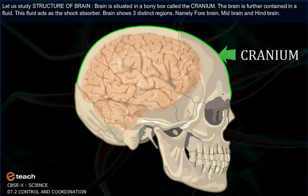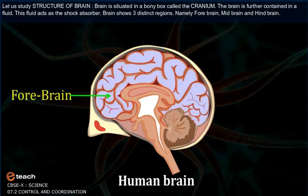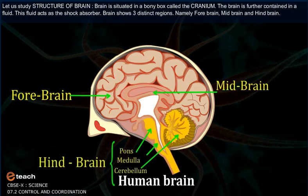The brain is situated in a bony box called the cranium. The brain is further contained in a fluid, and this fluid acts as a shock absorber. The brain shows three distinct regions: forebrain, midbrain, and hindbrain.